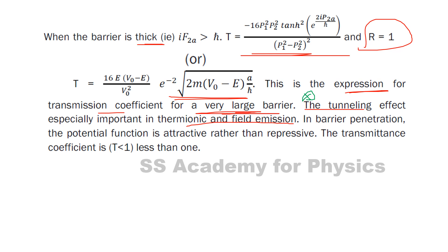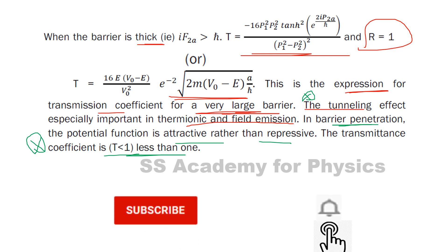The potential function is attractive rather than repressive. The transmittance coefficient T is less than one. This is very important. Hope you understand. If you have any doubt, put it in the comment box. Thank you and all the best.